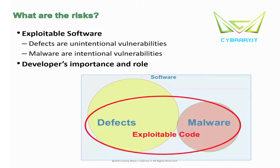What exactly are the risks we're trying to address as we cover this material? Mainly, in a nutshell, we're trying to address exploitable code. Exploitable code could be the result of various things — two of the main areas would be defects or malware. Defects are unintended programming bugs that programmers inadvertently create, which expose vulnerabilities inside their code. Malware, on the other hand, would be an intentional vulnerability — something injected into the code to make it exploitable.